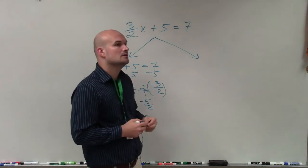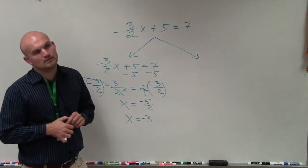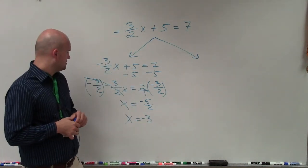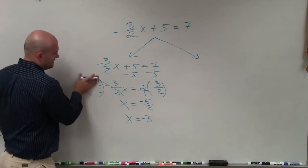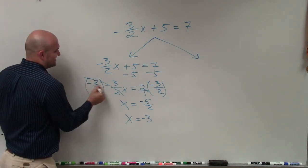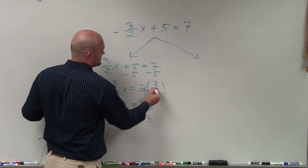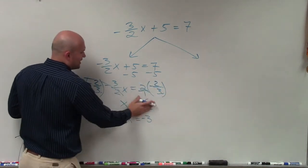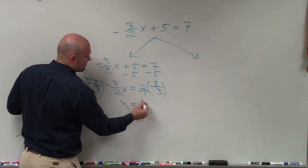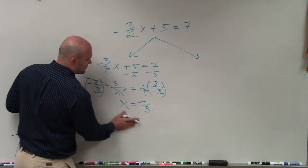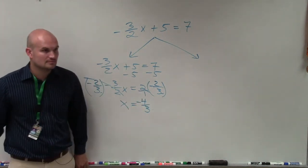Because I wasn't thinking and I didn't reciprocate it, it should be 2 over 3. Thank you. Yeah, you've got to flip the reciprocal. So therefore, I actually have 4 thirds. Negative 4 thirds, right?